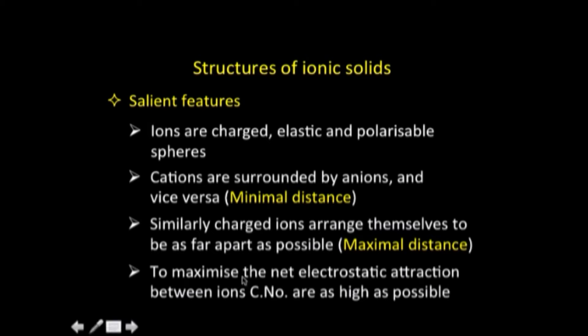In order to maximize the net electrostatic attraction — which governs the stability of ionic solids — the coordination numbers should be as high as possible. That means around a given ion there should be as many ions of opposite type as possible. This will depend on the sizes of the ions, which we will come to shortly. Those are the salient features of the structures adopted by ionic solids.